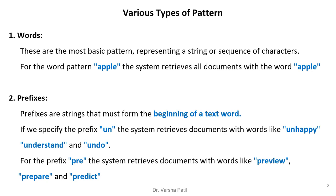Words are the most basic pattern, representing a string or sequence of characters. For the word 'apple,' the system retrieves all documents containing that word. For example, when searching in a PDF or web page for a particular string, we use Ctrl+F to search for that string. This is essentially a word pattern search.